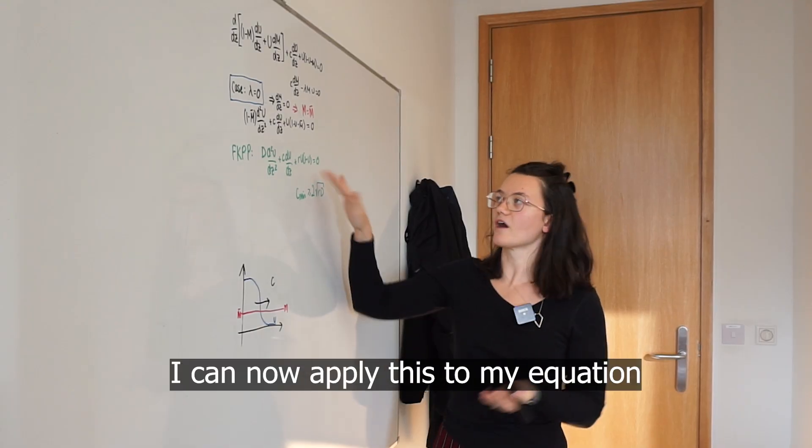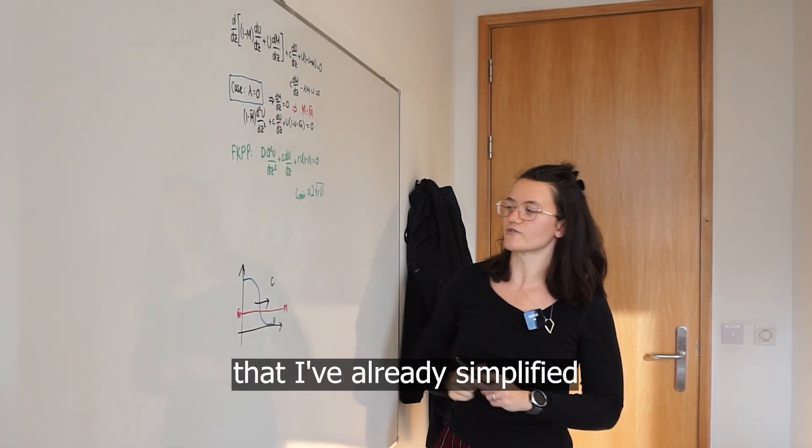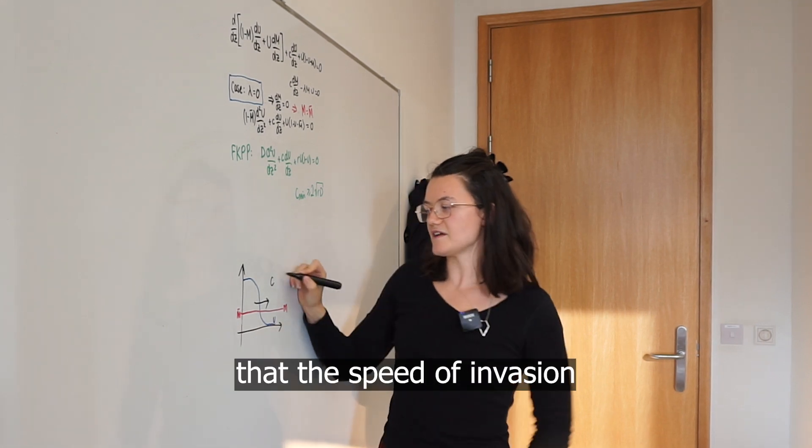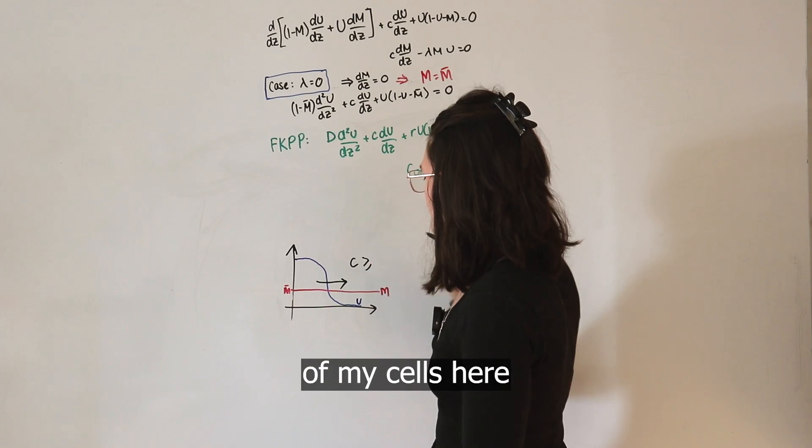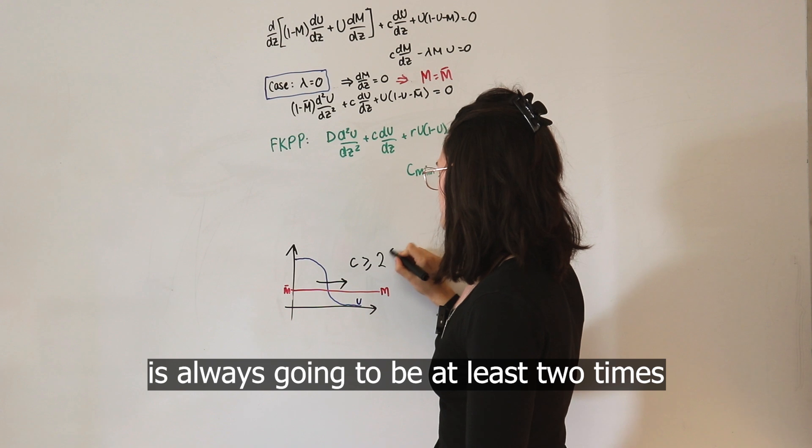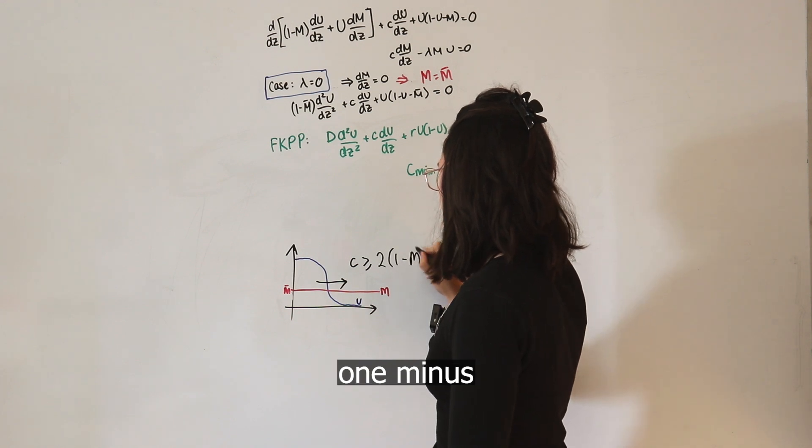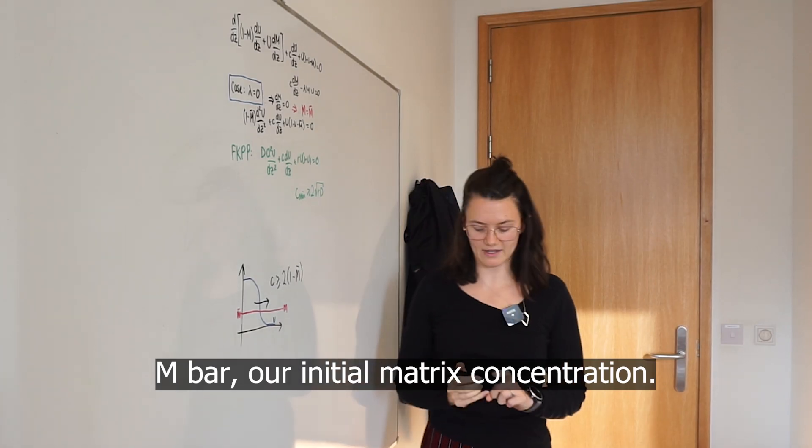Thankfully, I can now apply this to my equation that I've already simplified to find that the speed of invasion of my cells here is always going to be at least 2 times 1 minus M bar, our initial matrix concentration.